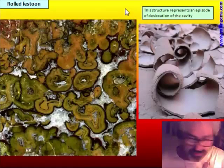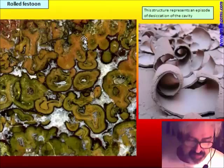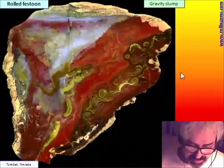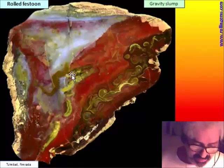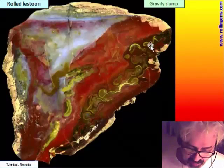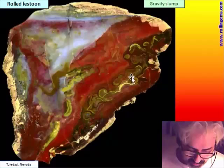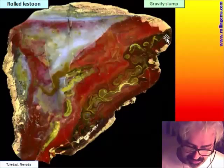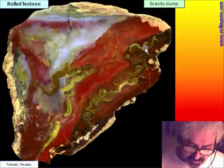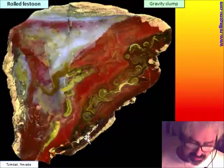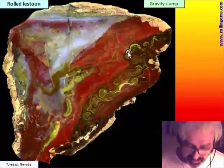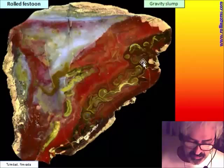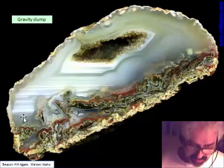This structure evidences an episode of desiccation inside the cavity. This is another example where desiccation occurs on the cavity floor — this is the horizontal line. We know that this green deposit has slumped down; you can see it flowing down the slope of the cavity.